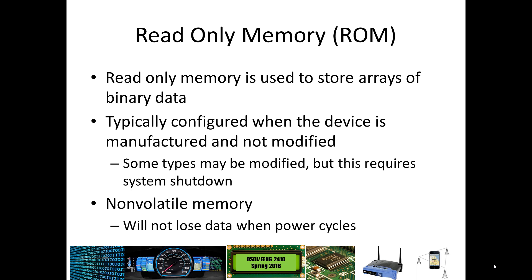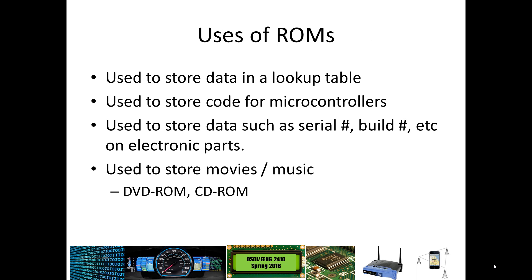Generally, in order to modify ROM, you have to shut down the system or go through some special kind of reconfiguration routine. It is non-volatile, which means that when the power is turned off, it does not lose its contents — it's going to retain what it had. So it's good for lookup tables. For example, if you're storing chemical information, data sheets, or binary information. Old cartridge-type games are also a good example of ROMs.